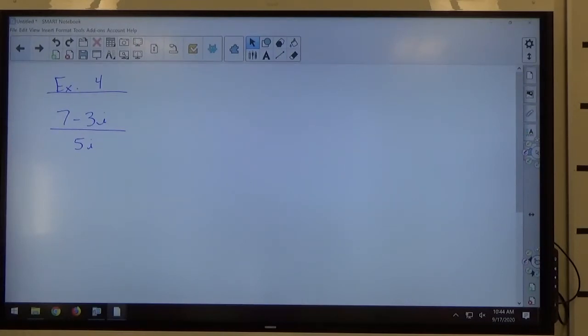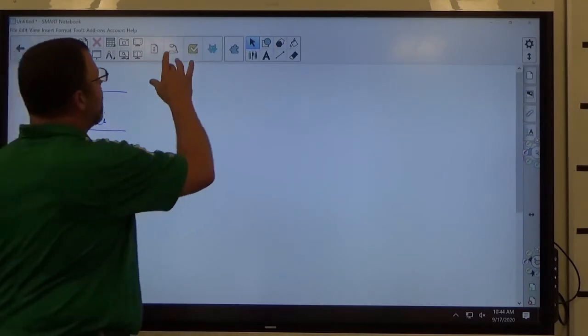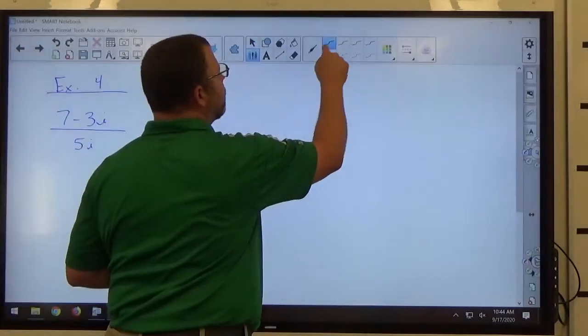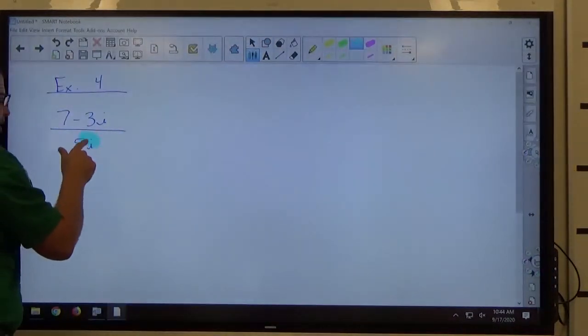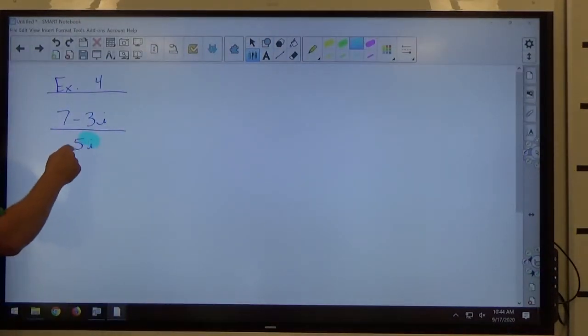We have an imaginary number in the denominator of a fraction. So let me just start off by giving you a basic rule of complex numbers, and that is that this is unacceptable. We have an imaginary or complex number in the denominator of a fraction.